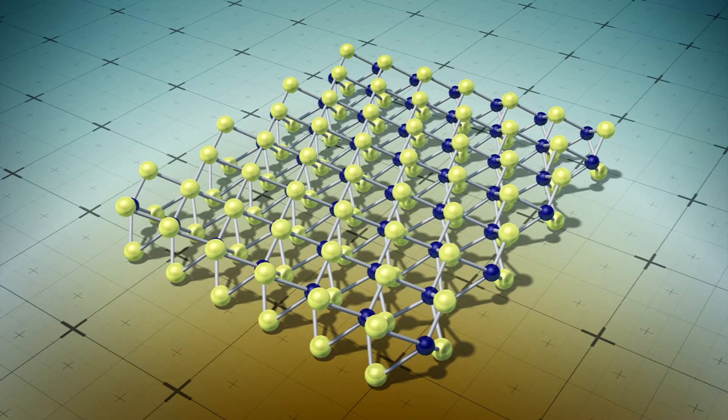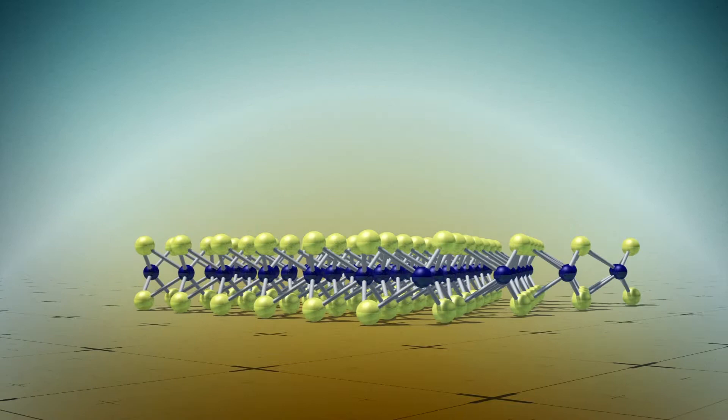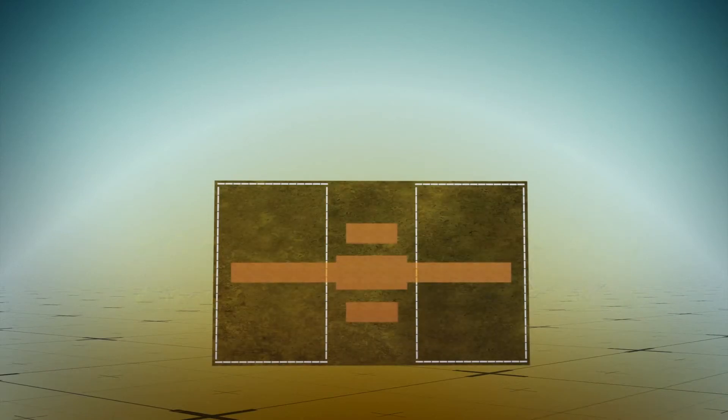Researchers from the Massachusetts Institute of Technology created a rectifying antenna or rectenna using a thin molybdenum disulfide semiconductor that's only three atoms thick.